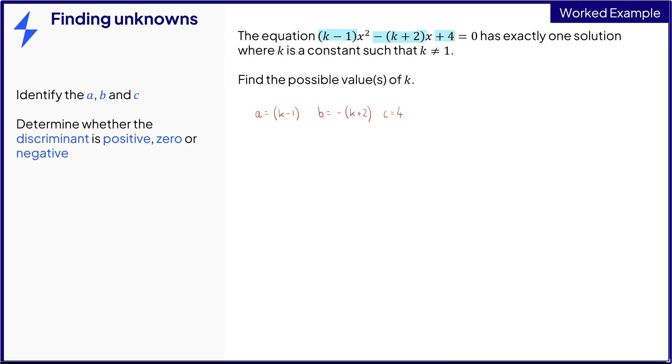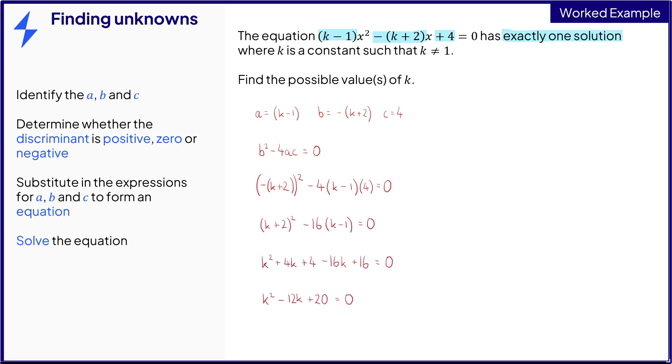So the key phrase in the question is exactly one solution. This means the discriminant is zero. We can then substitute the values for a, b, and c into that equation, and then simply solve it using algebra, and we should end up with two values for k.